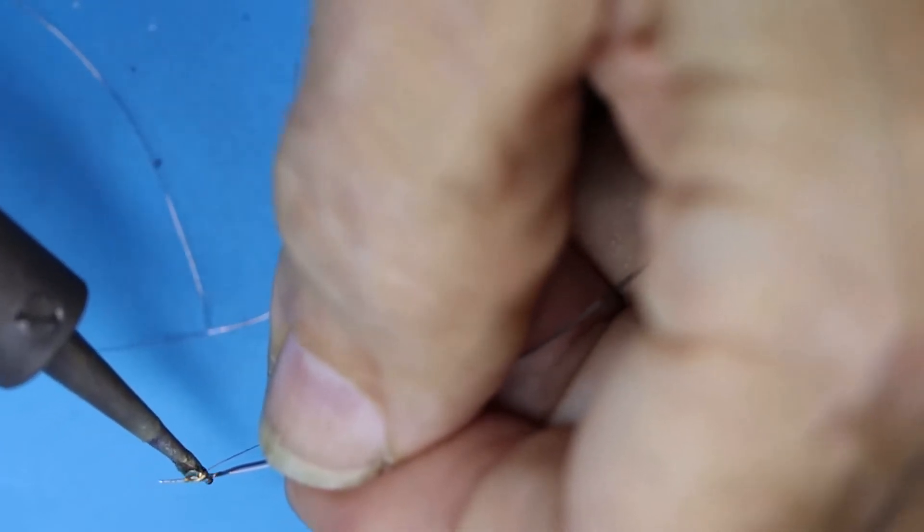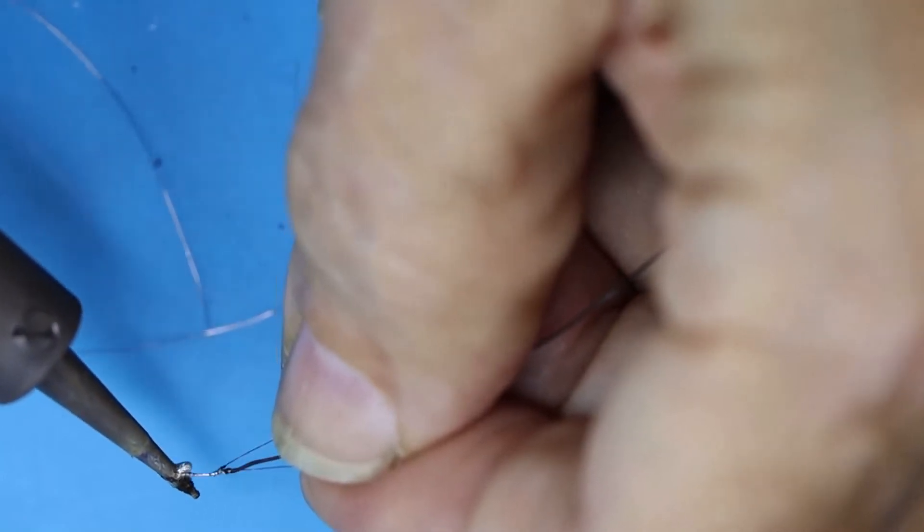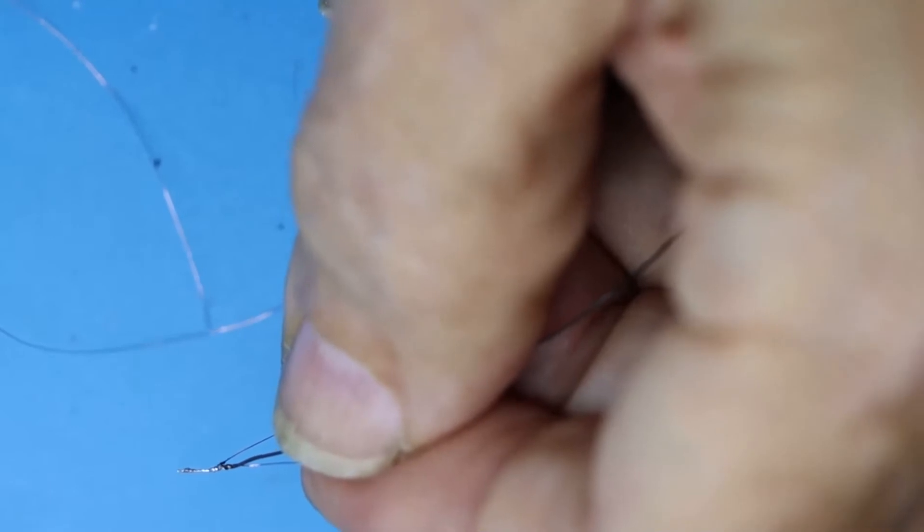And then tin it with a little bit more solder. Actually, solder the joint. Notice I leave that solder on there a little bit longer than usual. That's to melt the insulation on the magnet wire.